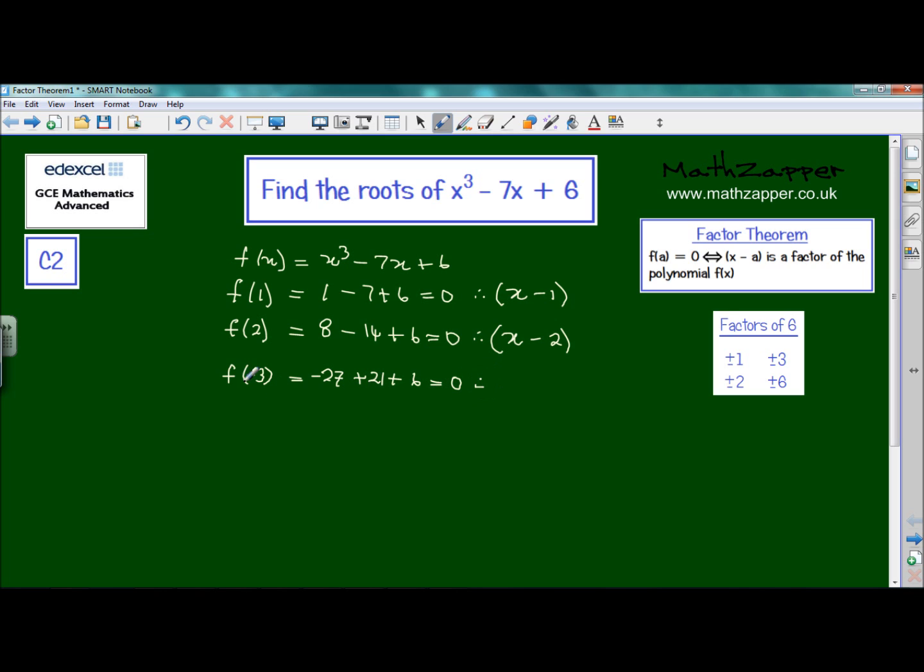So the root would be -3, which would give us the factor (x + 3). And again, it was important that we understood this so that we didn't have to spend too much time with trial and improvement methods trying to find values of a that would give us an answer 0.